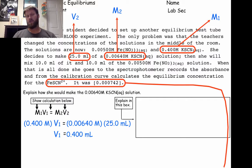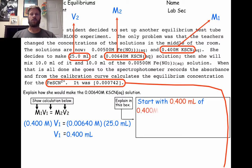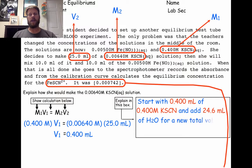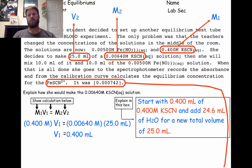So how much water do we need? 25 minus 0.4 is 24.6. So we're going to take 0.4 milliliters of the concentrated KSCN solution and add 24.6 milliliters of water to make the 25 milliliter solution needed for the rest of the experiment.